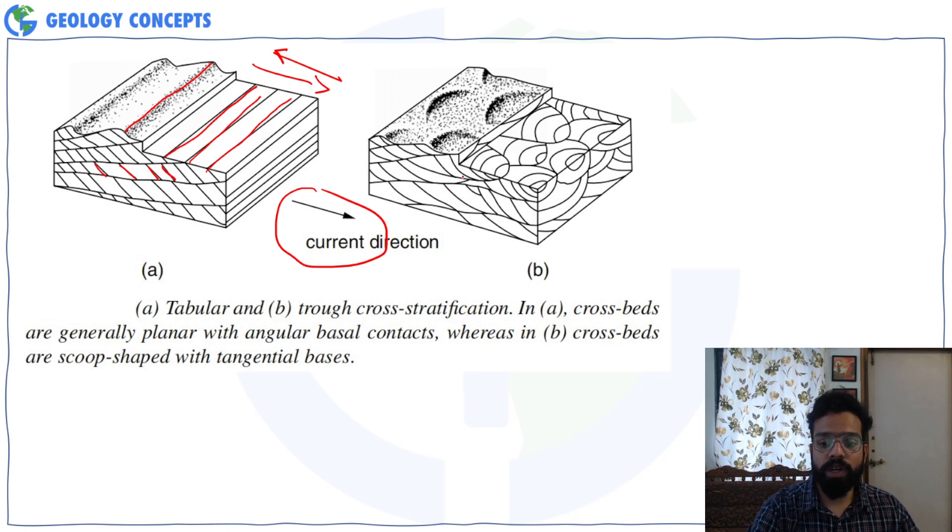On the contrary, if you look at the trough cross stratification, the crest line is undulating in this way. So the four sets, the trace of the four set on the section parallel to the bedding surface will also be mimicking that.